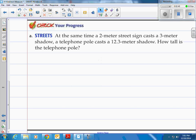Step one is drawing yourself a little picture so you can see what's going on. So I've drawn a sign and a telephone pole. And I put in the information that they've given. They said that the sign is actually 2 meters tall but it casts a 3 meter shadow. And the telephone pole casts a 12.3 meter shadow. So how tall is that telephone pole?